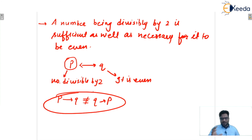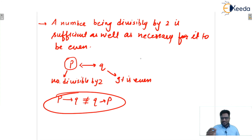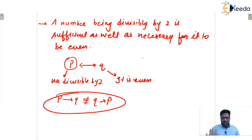Today we discussed logical connectives: negation, OR, AND, XOR, and conditional statements. We discussed implication P implies Q and its meaning, various terminologies to express P implies Q, and the biconditional with its terminologies. These are the basics of mathematical logic, which will be very important for further topics. Thank you so much.